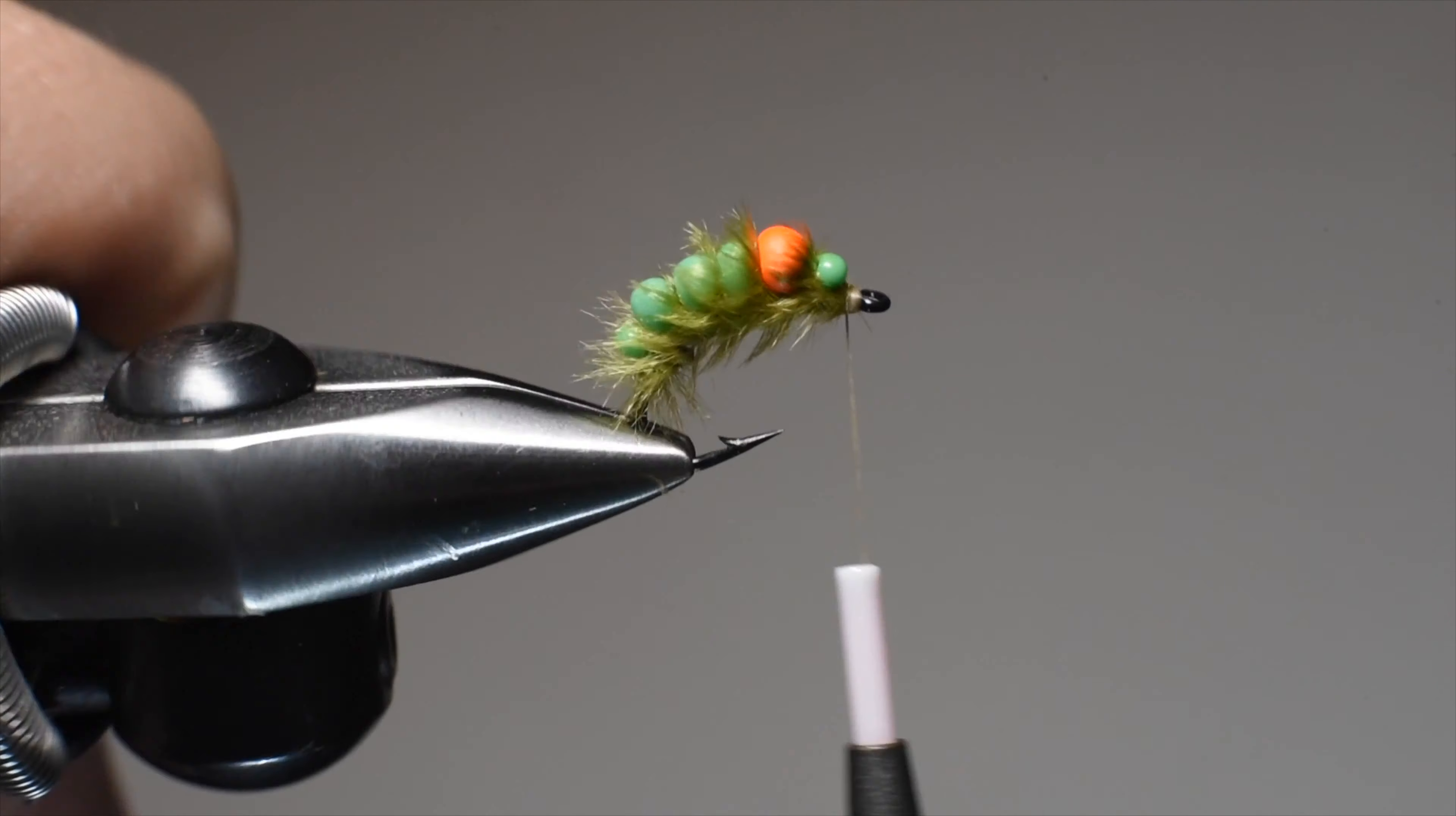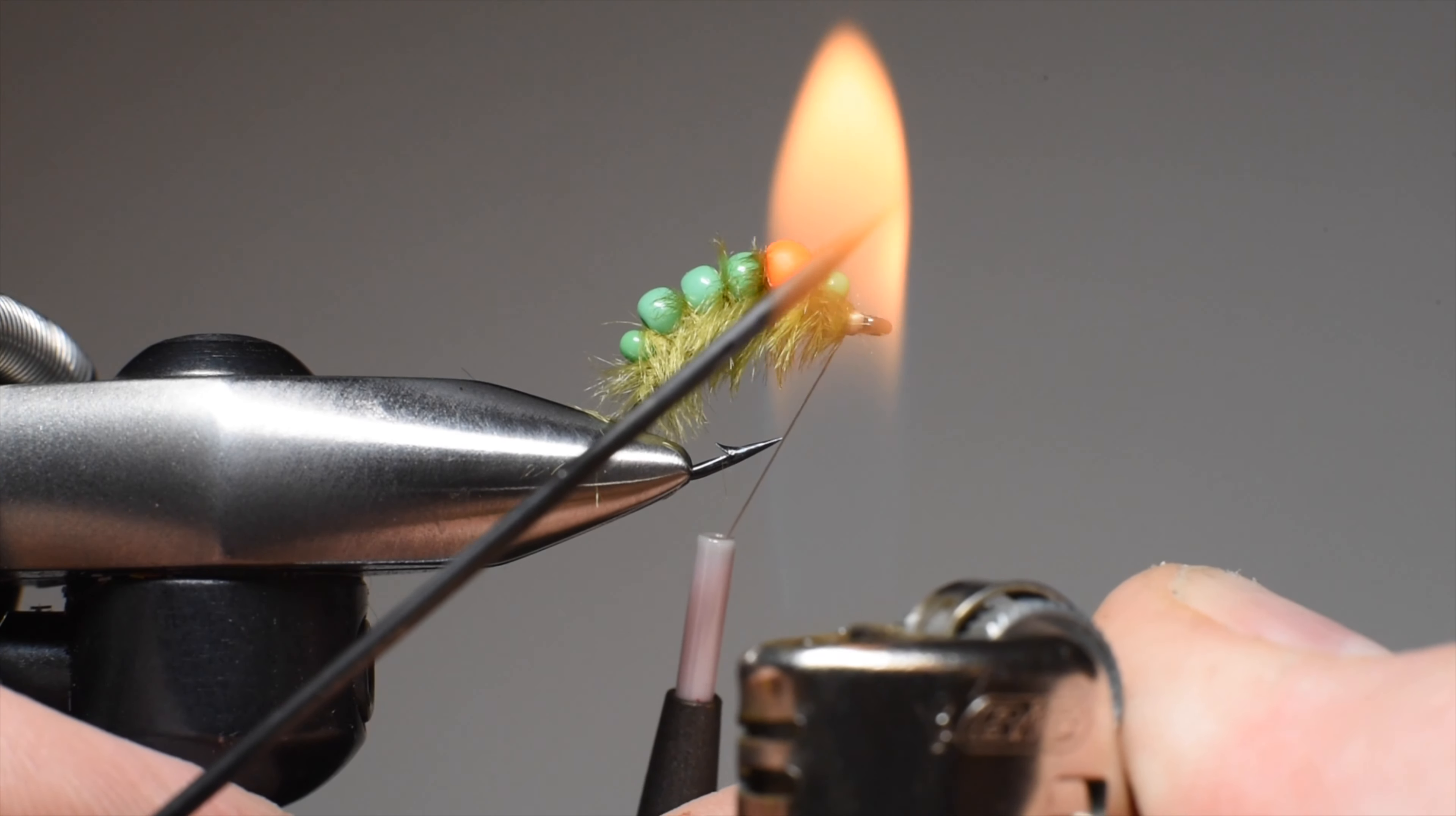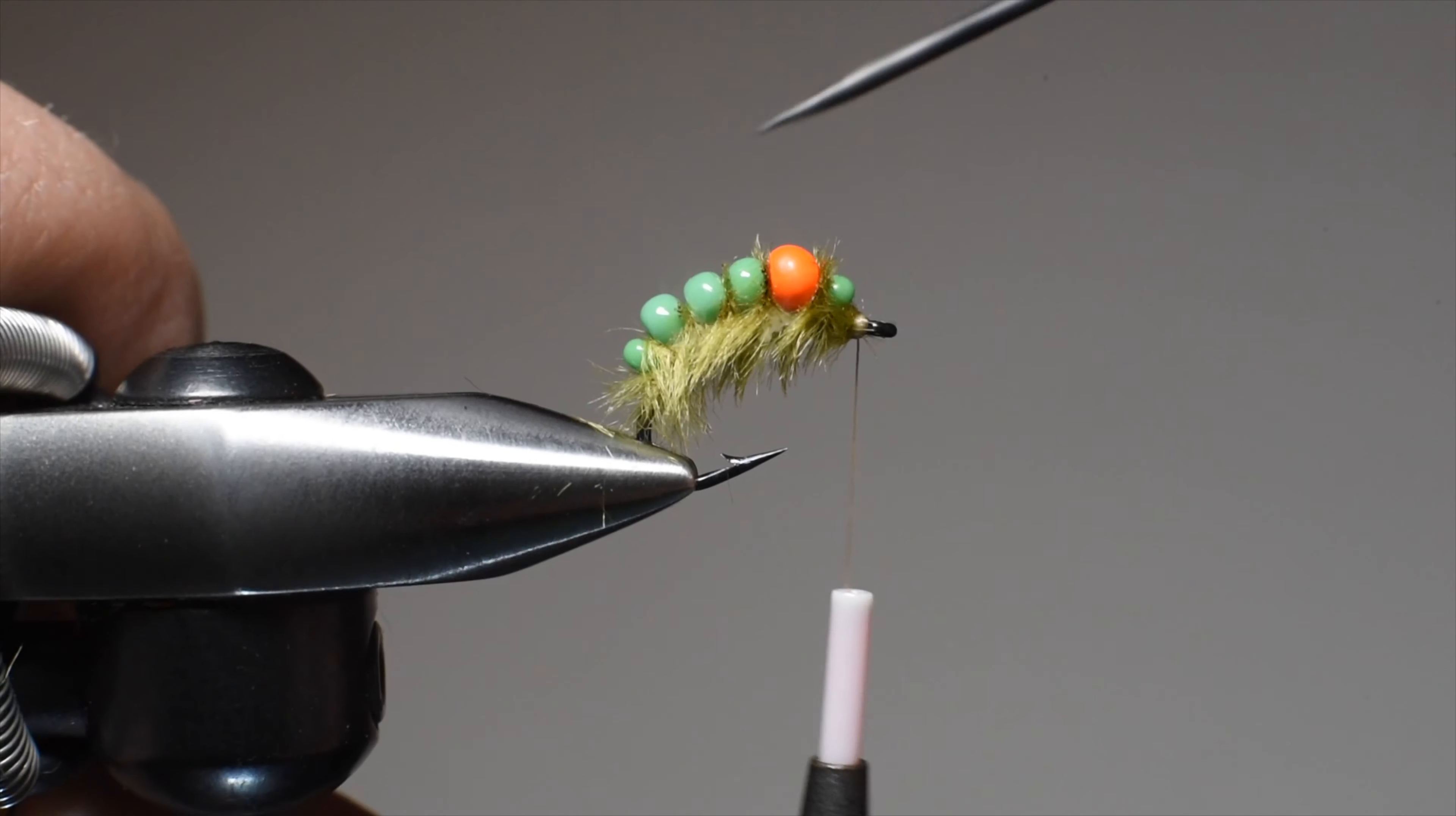We'll snip out those tag ends. You may want to use scissors to cut out the excess material, but I've got a new trick here. Take a bodkin and heat it up for about 10 to 15 seconds until you start to see the tip glow.